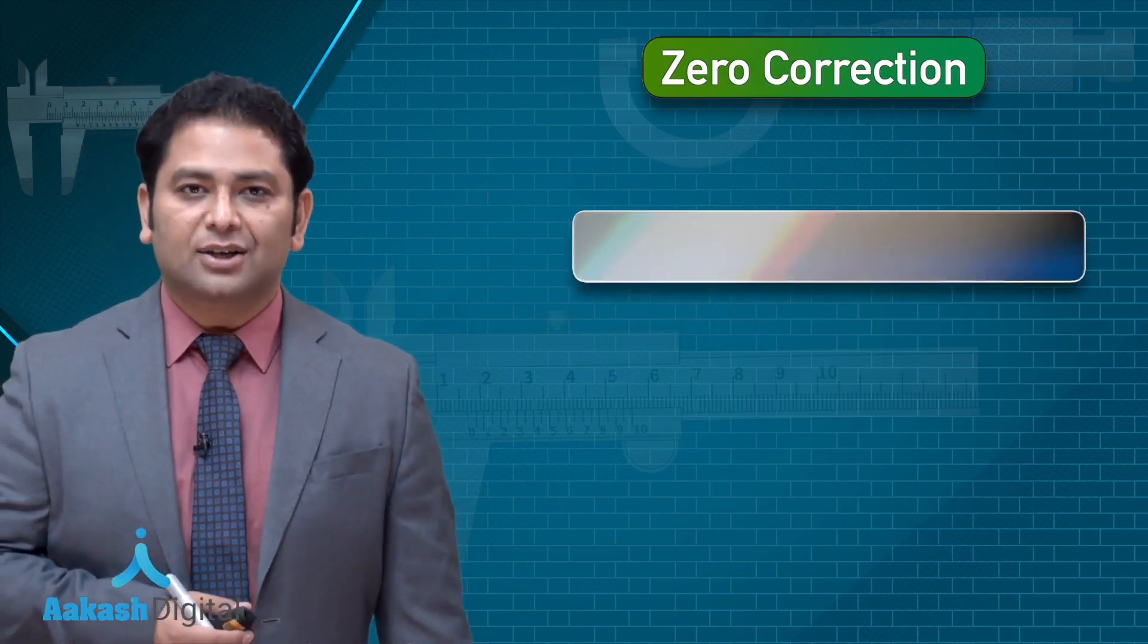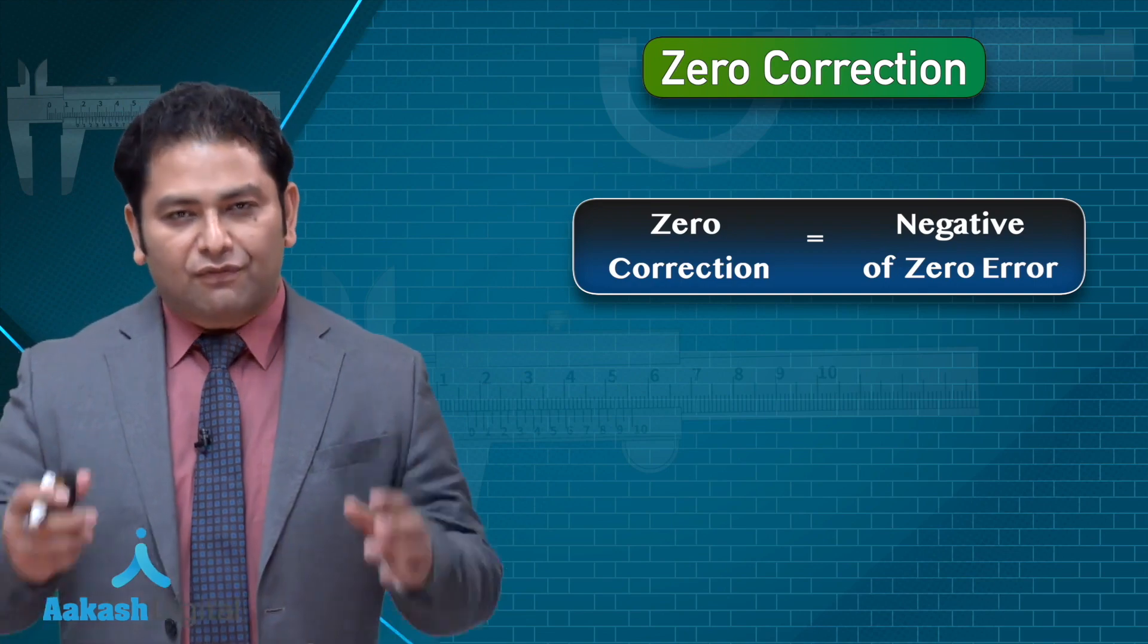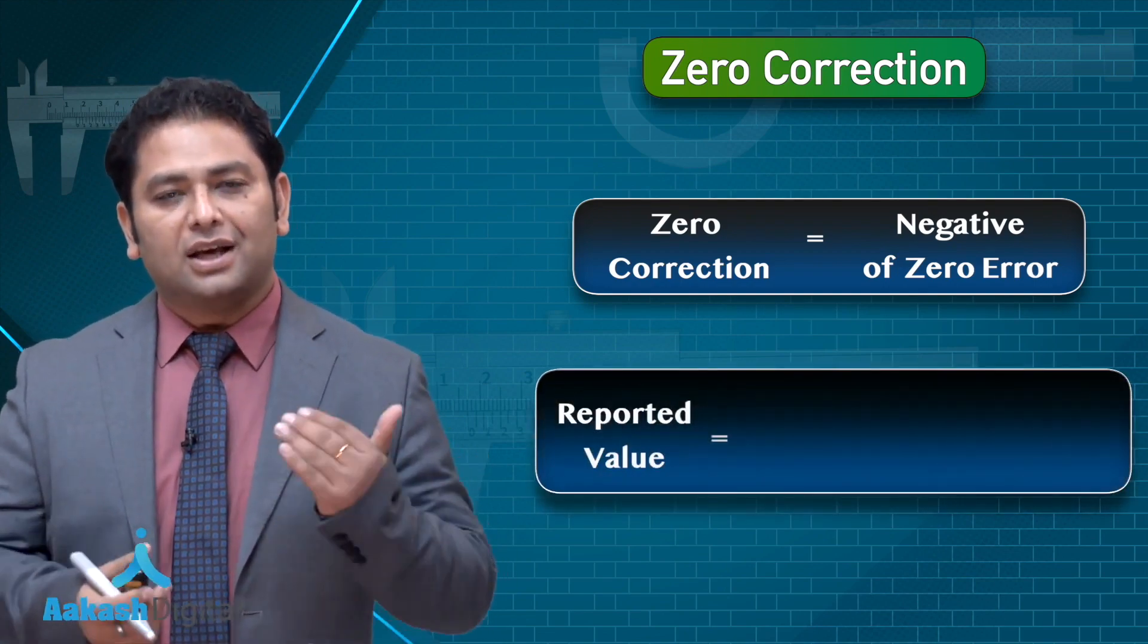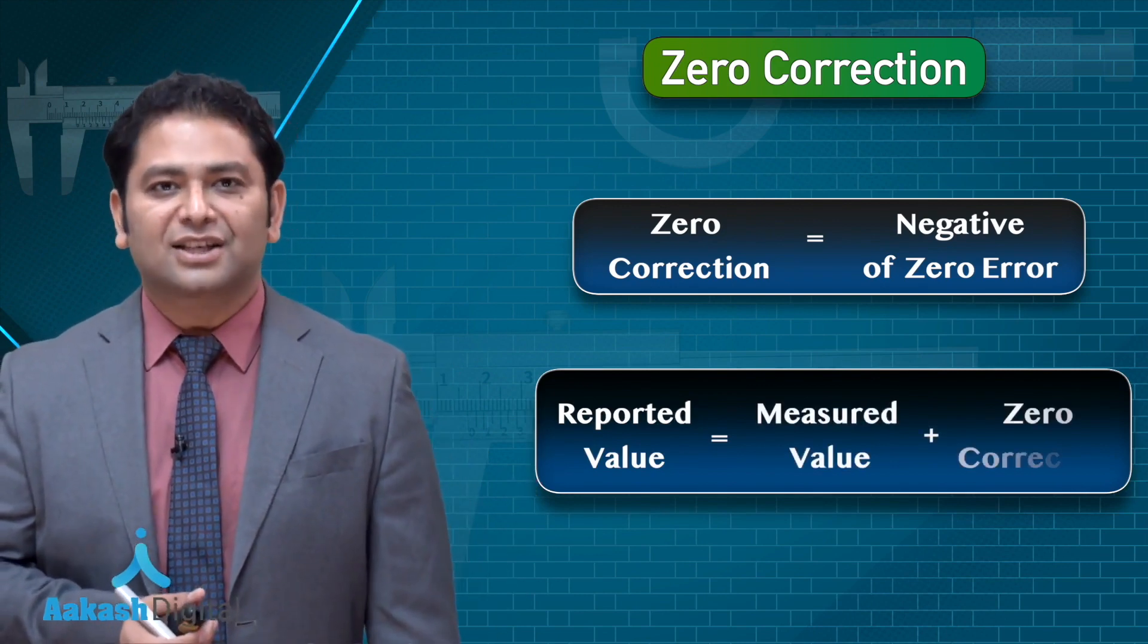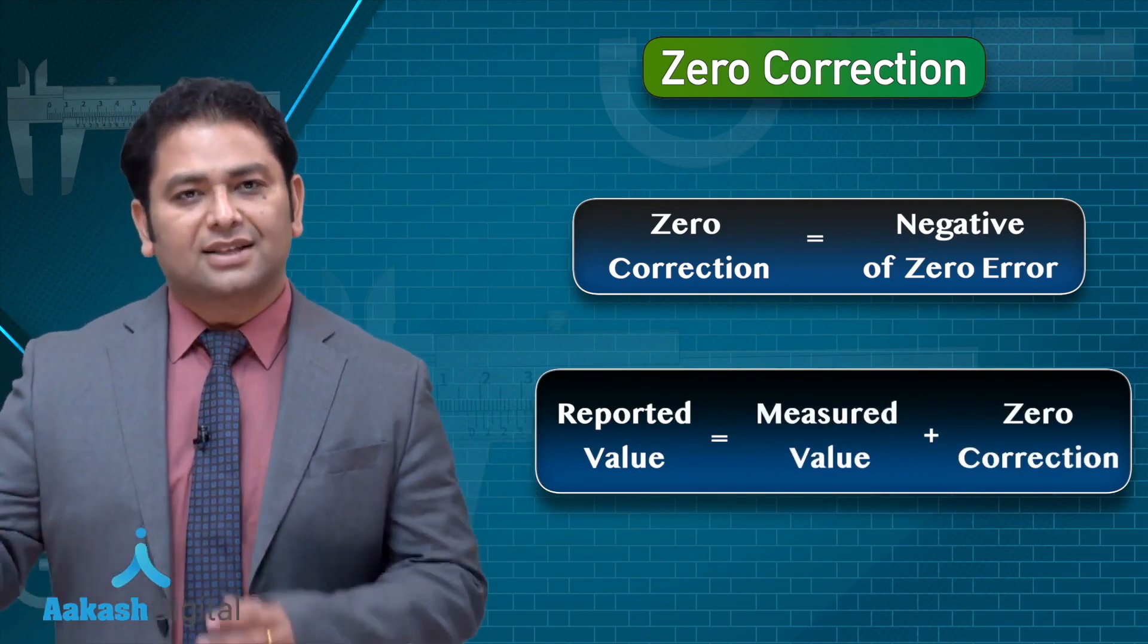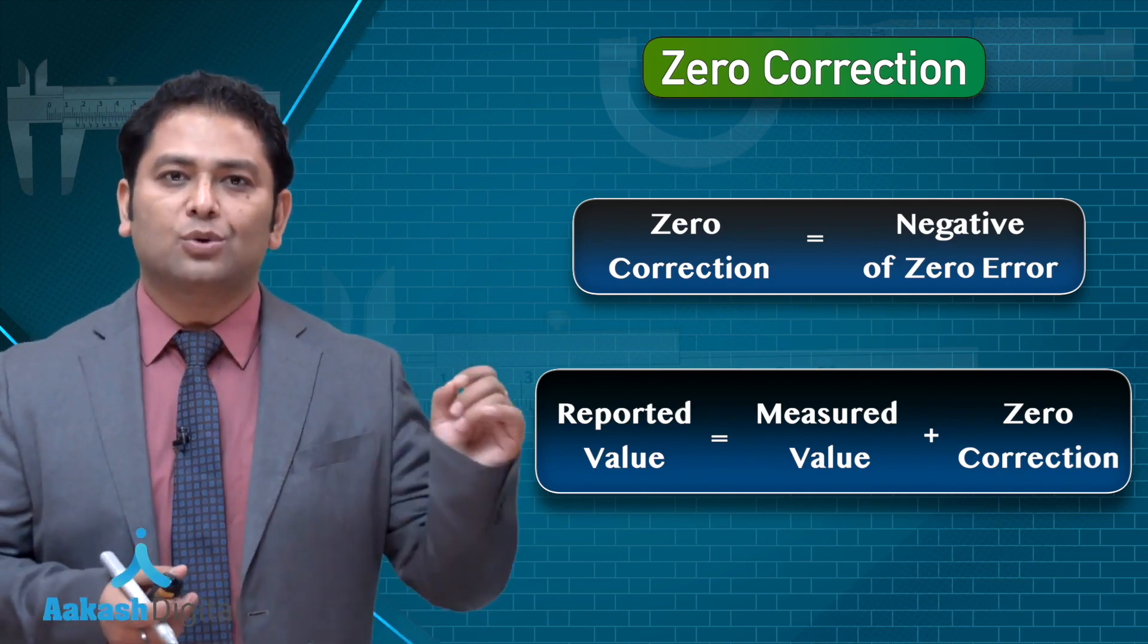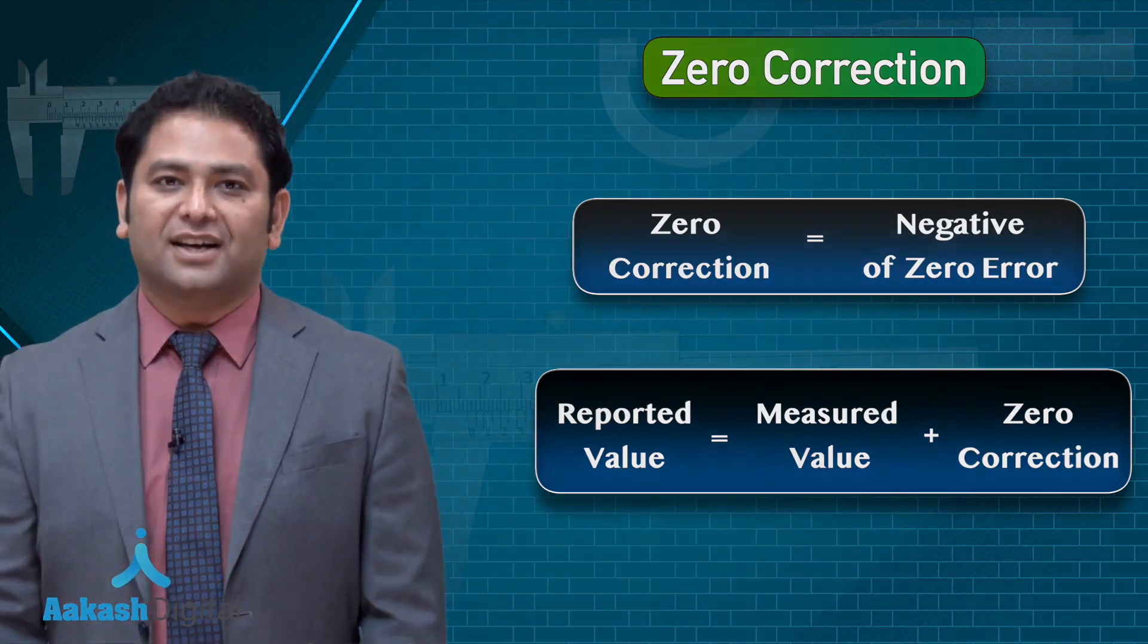Once you compute the zero error, then we talk about zero correction. Zero correction is negative of zero error. Finally, when you report the value, the reported value is the sum of measured value and zero correction. Zero correction, depending upon the positive or negative correction, the value will be compensated. That was about the zero error of Vernier.